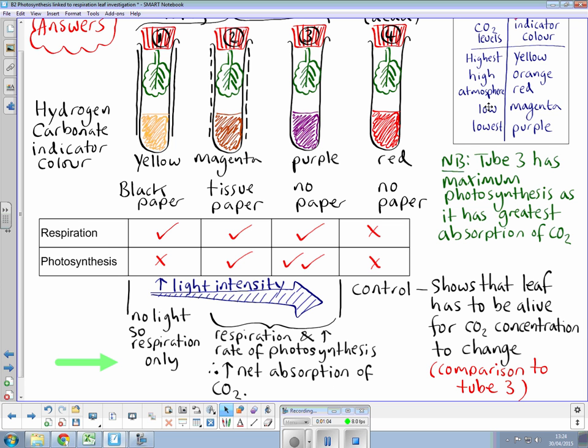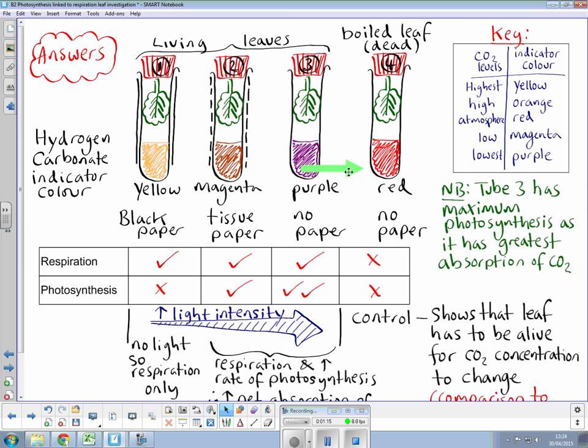We have a low level of CO2 in the atmosphere of the boiling tube going to lowest, so CO2 is being absorbed. As you probably guessed, the fourth tube here is actually a control tube.